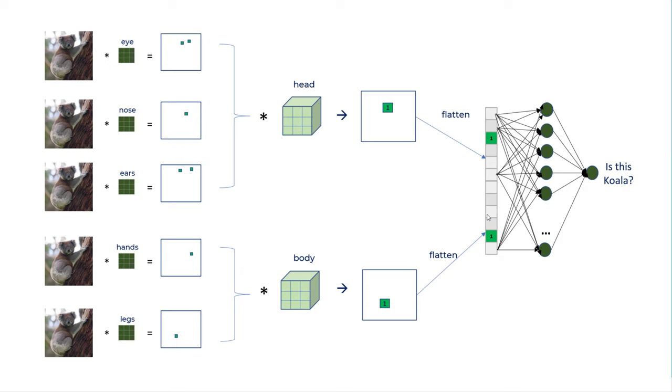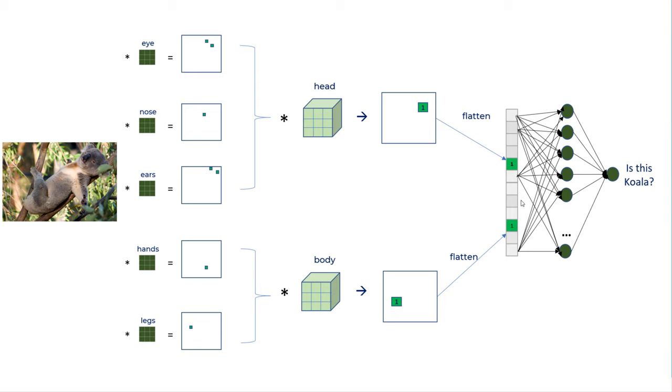After you join, you can make a fully connected dense neural network for your classification. Now why do we need this fully connected network here? Well, you can have a different image of koala. See my koala is sleeping. He's tired.